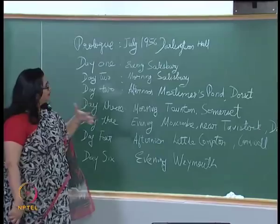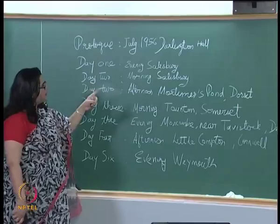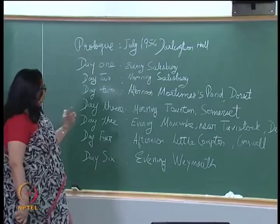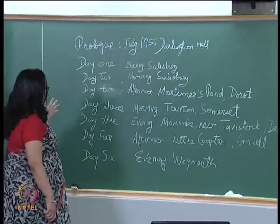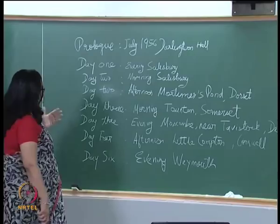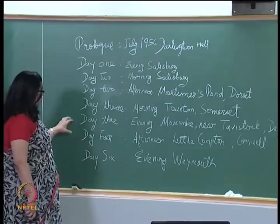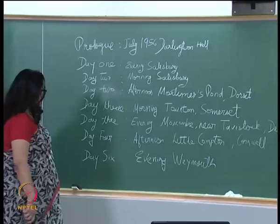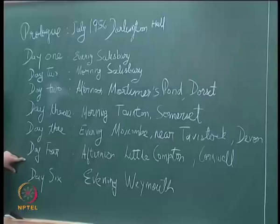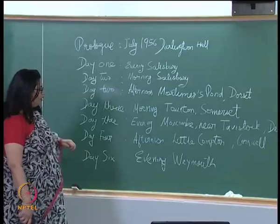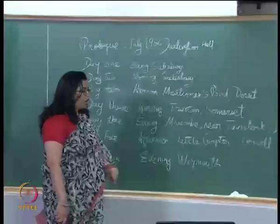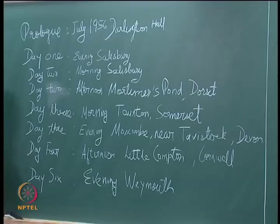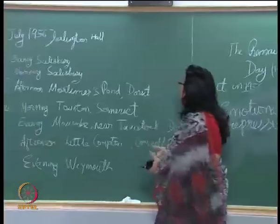As Stevens starts motoring through the English countryside, the chapters are: Day One evening Salisbury; Day Two morning Salisbury; Day Two afternoon Mortimer Pond in Dorset; Day Three morning Taunton Somerset; Day Three evening Moscombe near Tavistock; Day Four afternoon Little Compton Cornwall; and Day Six evening Weymouth — notably, Day Five is missing.